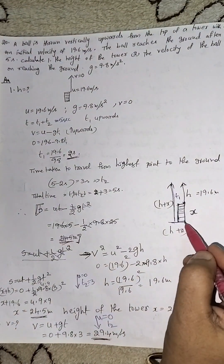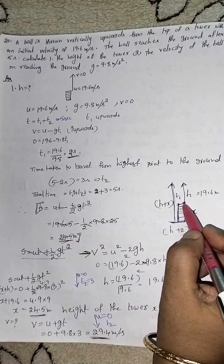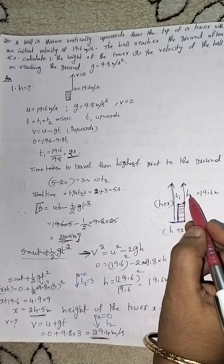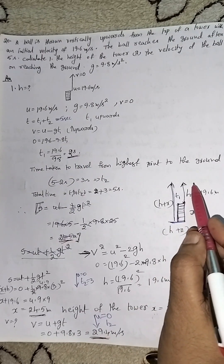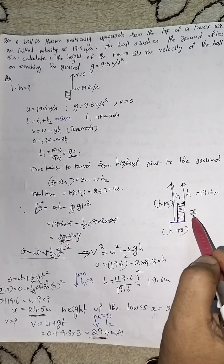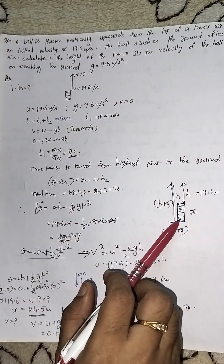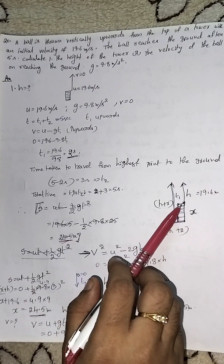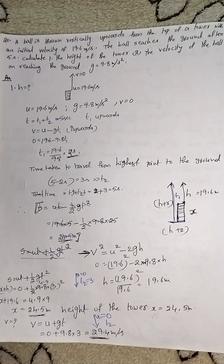In summary: the ground is at the bottom, tower height X equals 24.5 meters, and the ball thrown vertically upward travels distance H equals 19.6 meters. The total distance traveled is X plus H. The question asked only for the tower height. I hope you understand this problem with the simple diagrams and formulas. Thank you everyone — please subscribe to my channel.